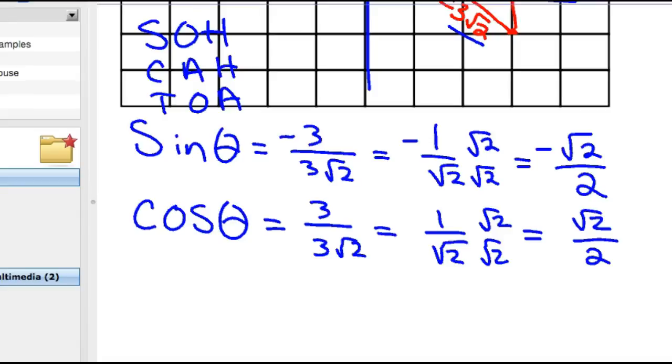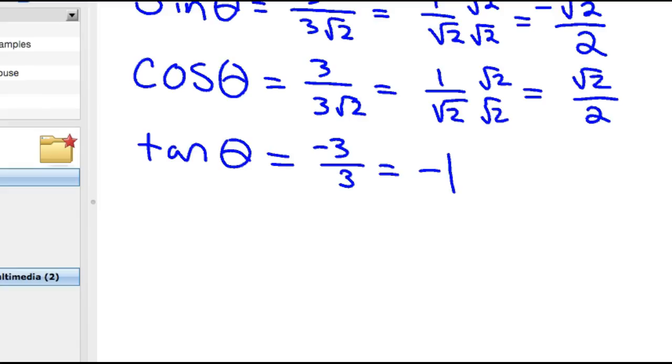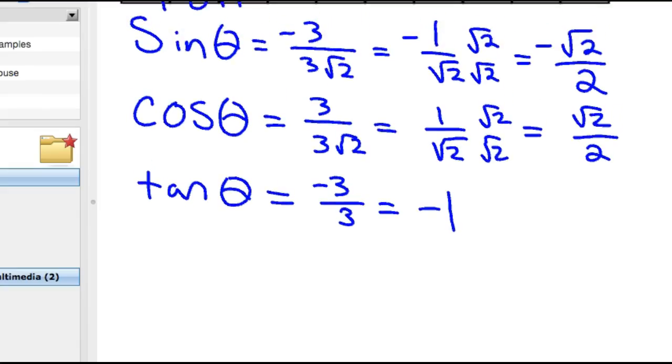Then tangent theta is opposite over adjacent, which would be negative 3 over 3, which simplifies to negative 1.